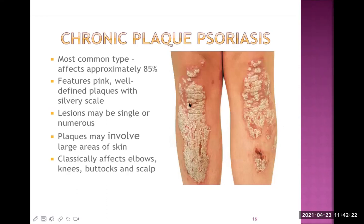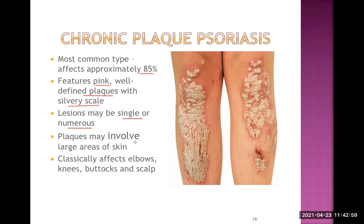Chronic plaque psoriasis is the most common type, affecting approximately 85% of psoriasis patients. The features are well-defined plaque with silver-colored scale on the surface, and if we remove this scale, the underlying surface is erythematous — slightly pinkish. The lesions may be single or numerous, and plaques may involve large areas of skin. Classically it affects the elbow or back of the elbow, knees, buttocks, scalp, and the anterior part of the tibia.